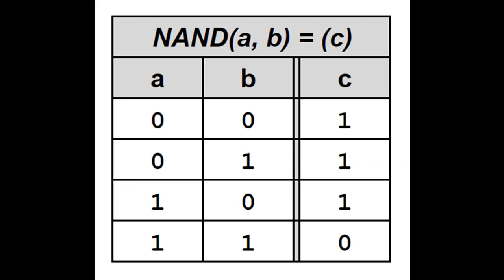A truth table is a table showing all the possible input combinations for the gate as well as the expected output value for each case. Here is a truth table for the NAND gate — at the top there is a function for the NAND gate, and below it the different lines showing each of the possibilities.